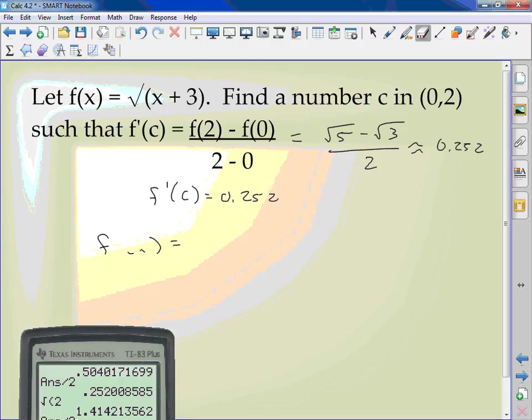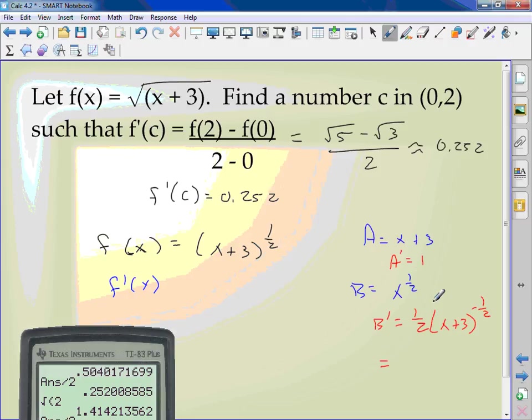So I take and find f'(x). I'm just going to rewrite it to make it easier. A lot of you don't like the square root, you write (x + 3)^(1/2). This is the chain rule. A is x + 3, b is x^(1/2). The derivative of a is just 1. The derivative of b, 1/2 out front, whatever a is, subtract 1.